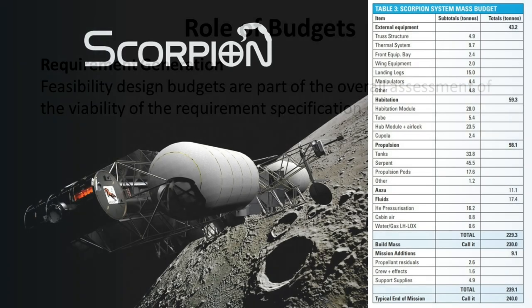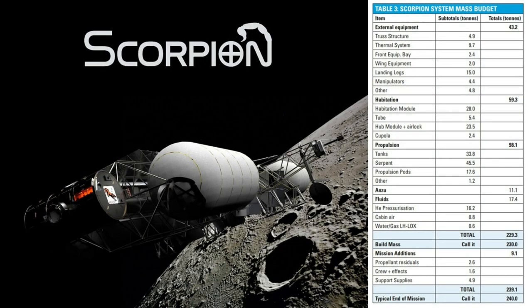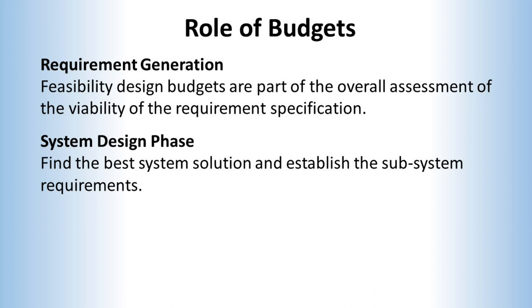For example, when Mark published his technical paper describing the Scorpion, he included a mass budget. It's probably a little light to make a full assessment on feasibility if this were a serious project proposal, but enough to show a system like this is credible — typical of published budgets for early concept designs. In the early stages of system design, when subsystem requirements are being established, the budgets enable subsystems like power to be sized. This is where the balance of the power system and the power it can provide is weighed against its impact on the mass budget.